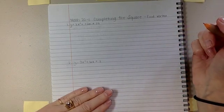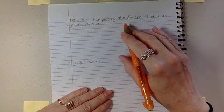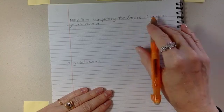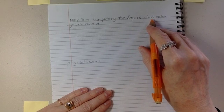Okay, here we go with completing the square. Completing the square is used primarily to find the vertex so that you can graph the parabola easily.